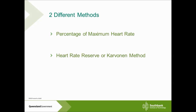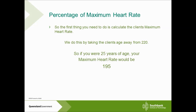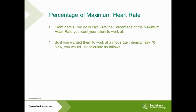The Karvonen method is considered to be the more accurate of the two. When calculating the percentage of maximum heart rate method, the first thing we need to do is calculate the client's maximum heart rate. We do this by taking the age away from 220. So say you had a client that was 25 years of age, we would calculate their maximum heart rate to be 195 beats per minute — 220 minus 25 gives you 195.